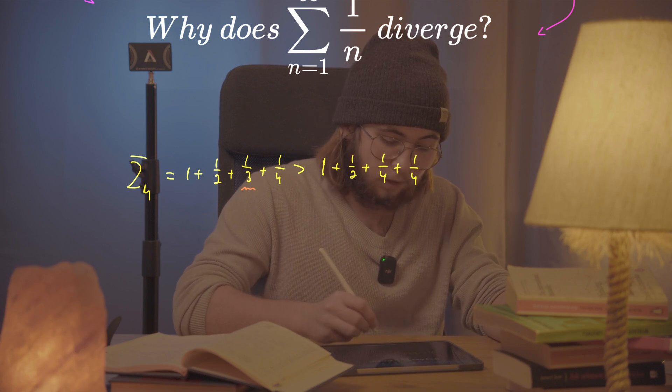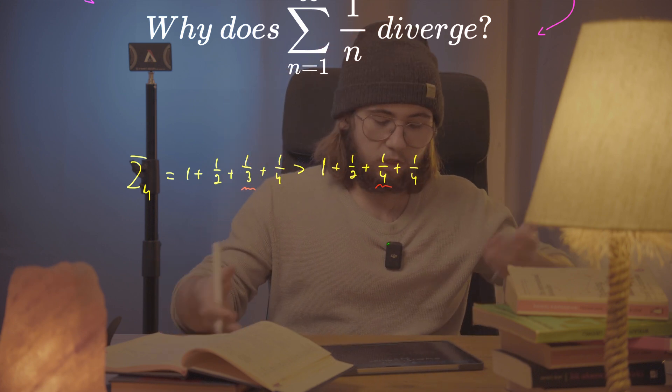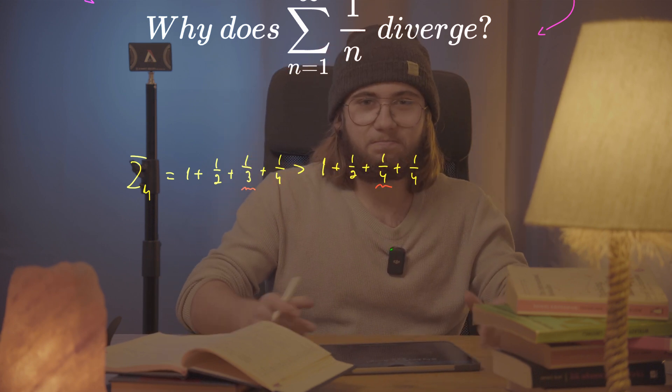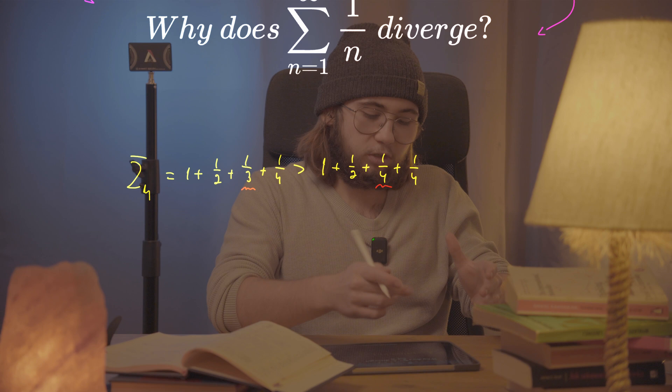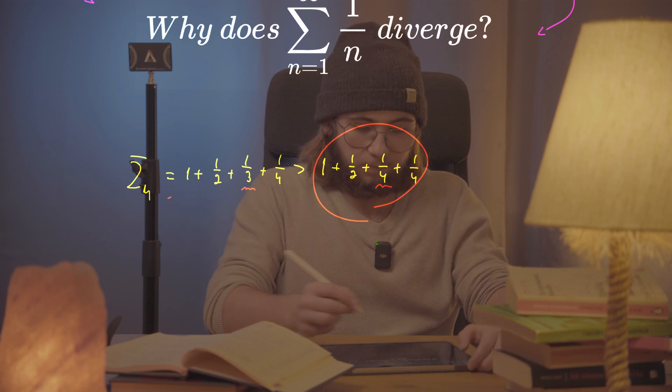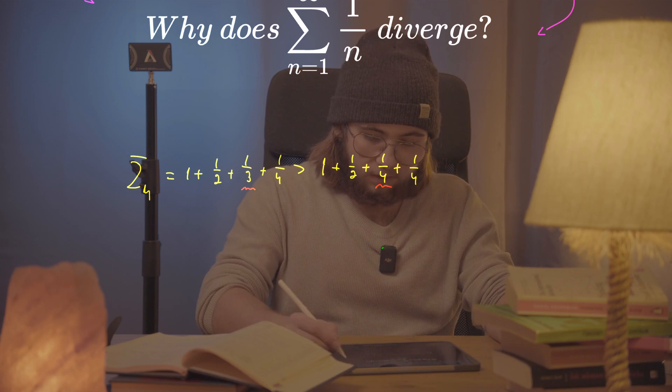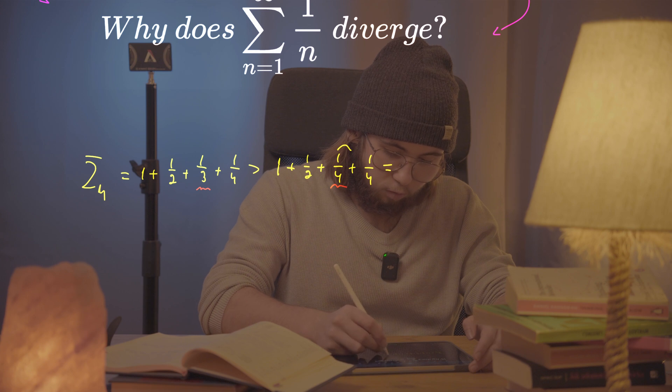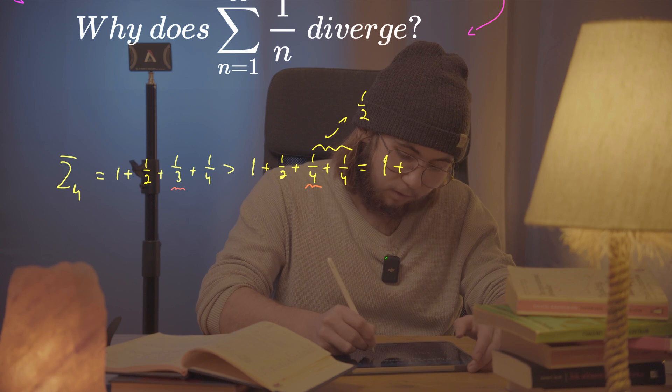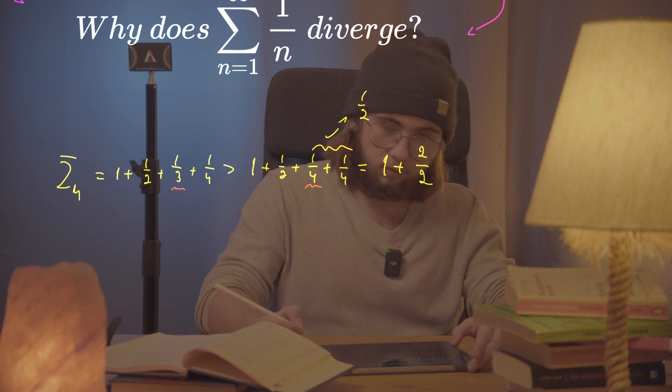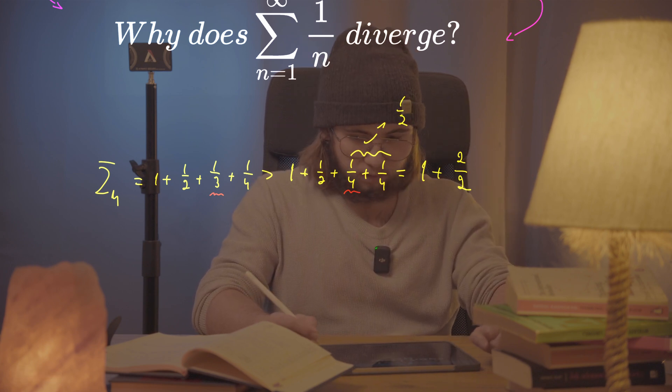What I did here is I actually just replaced this third right there with a quarter. A quarter is less than a third - I mean, just try slicing a cake into three or four slices and take one of those, and you will see that this partial sum right here is greater than this pseudo partial sum that I created. But this thing is equal to, well, those quarters here I'm gonna just sum up to a half, so it's gonna be equal to 1 plus 2 over 2, so 1 and 2 halves, which is actually 2.